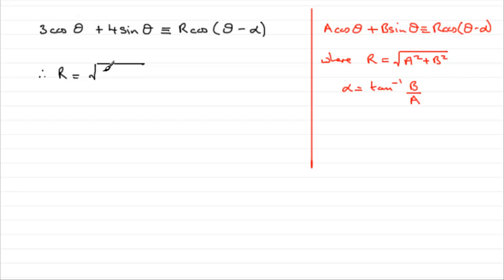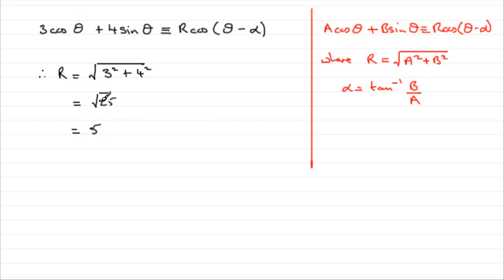So this is going to be the square root of a squared — 3 squared — plus b squared — b being 4 — 4 squared. That gives us 9 plus 16, which is 25, and the square root of 25 is 5. We always take the positive value of the square root for this type of work.